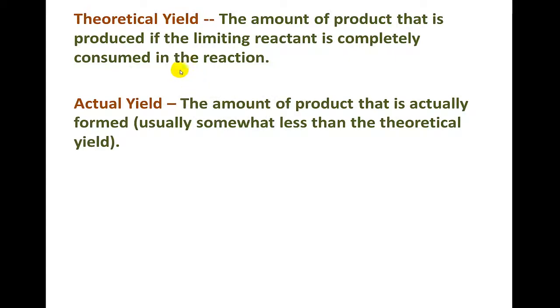But in reality, when we run the experiment, we end up with an actual yield. And this is the amount of product that is actually formed in the experiment. And it's usually going to be a little less than the theoretical yield, or it can be a lot less. And that's going to depend on experimental error.